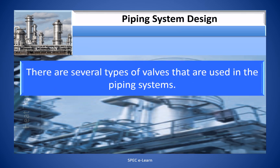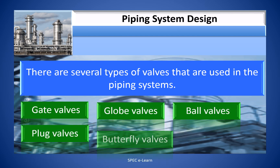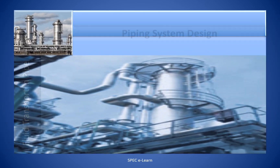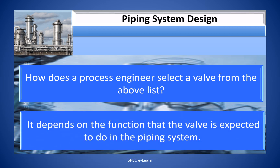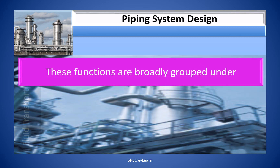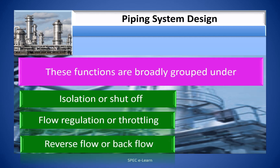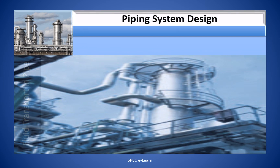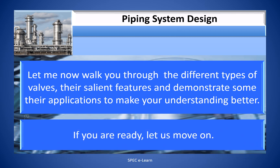There are several types of valves used in piping systems: gate valves, globe valves, ball valves, plug valves, butterfly valves, and diaphragm valves. A process engineer selects a valve based on the function the valve is expected to perform in the piping system. These functions are broadly grouped under isolation or shutoff, flow regulation or throttling, and reverse flow or backflow prevention. Let me now walk you through the different types of valves, their salient features, and demonstrate some applications to better your understanding.